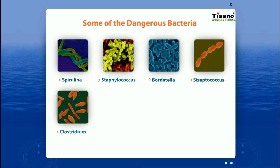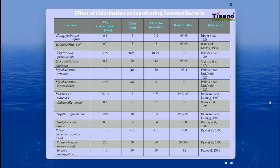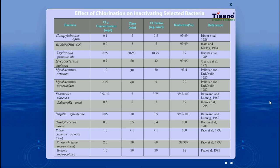These are some of the dangerous bacteria present in water. This is a collection of data from research papers regarding the effect of chlorine on inactivating bacteria. For example, in the case of E. coli, it only takes 0.2 mg of chlorine per liter of water — or 0.2 ppm — in just 3 minutes to kill 99.99% of the bacteria.